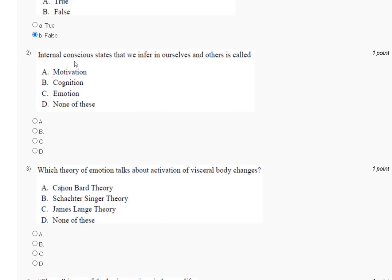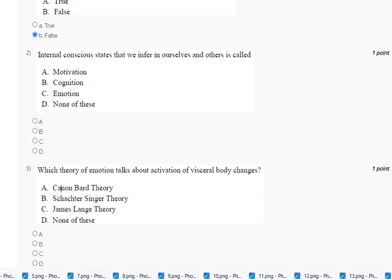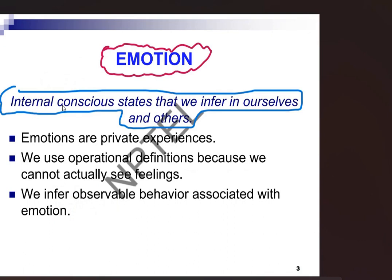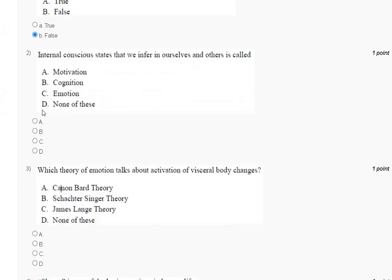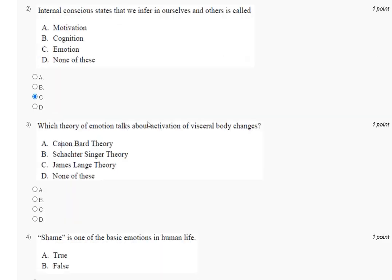Question number two: internal conscious state that we infer in ourselves and others is called — the explanation of question number two is here. Internal conscious state that we infer in ourselves and others is called emotion. So the correct answer to question number two is option number A.